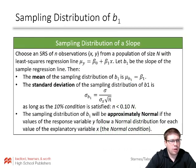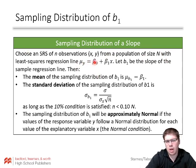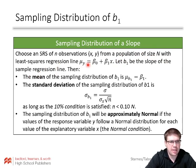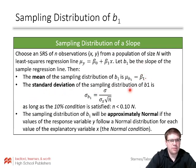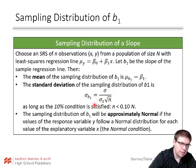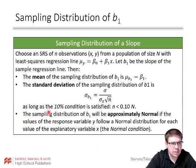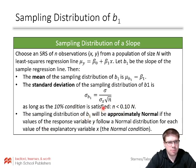To summarize: when we choose a simple random sample of n observations — x, y coordinate pairs — from a population with regression line mu y equal to beta naught plus beta 1 x (or alpha plus beta x), let b1 be the slope of the sample regression line. The mean of the sampling distribution, mu b1, equals the population slope beta. The standard deviation is sigma over sigma x times the square root of n, as long as the 10% condition is satisfied. The sampling distribution of b1 will be approximately normal if the values of the response variable y follow a normal distribution for each value of x.